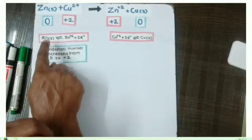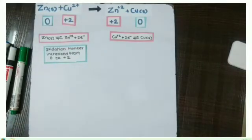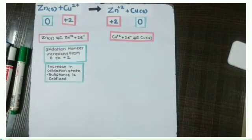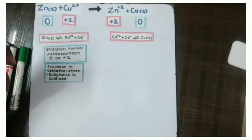Oxidation number of zinc is increased from 0 to +2. As oxidation number is increased, we can say that that substance is oxidized. Increase in oxidation state means the substance is oxidized. Here zinc has lost its electron and converted into an ion.